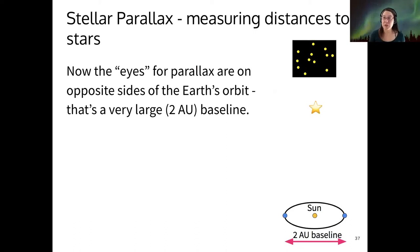So how does this apply to measuring distances? We can basically treat the Earth's orbit around the sun as the location of our two different eyes.